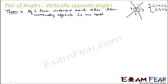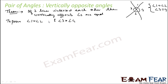We can't just draw these lines and measure these angles using a protractor. Because it is a theorem, we have to prove it. We have to prove that angle 1 equals angle 2 and angle 3 equals angle 4, using axioms.